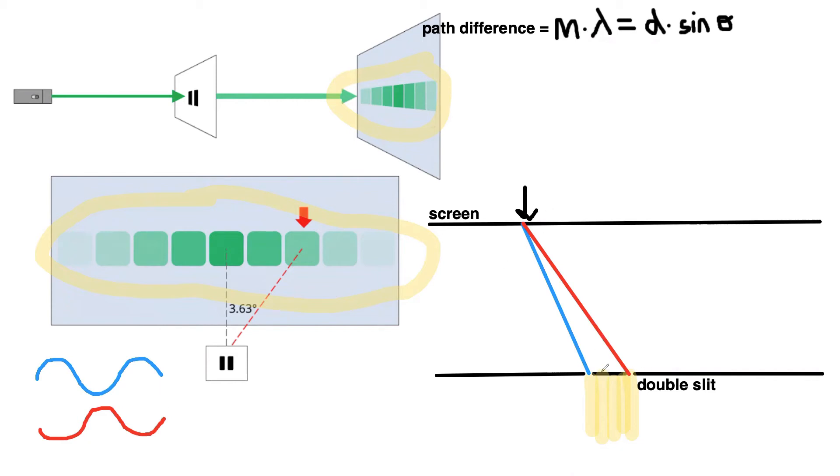That's going to happen at times when we have a half number multiple of the wavelength. So, for example, if the red wave coming from the right slit traveled half a wavelength more than the wave coming from the left slit shown in blue, we would end up with this situation happening: destructive interference. And as a result, we would have a minima.